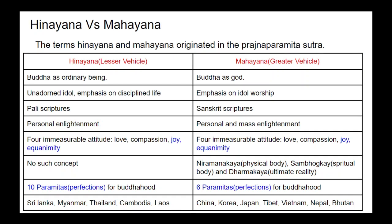From the early Buddhist school, two important schools emerged: Hinayana and Mahayana. The terms originated in the Prajnaparamita Sutra — Hinayana means Lesser Vehicle and Mahayana means Greater Vehicle. In Hinayana, Buddha is considered an ordinary human being; in Mahayana, Buddha is considered God. In Hinayana, the Buddha statue is unadorned and emphasis is on disciplined life; in Mahayana, emphasis is on idol worship.